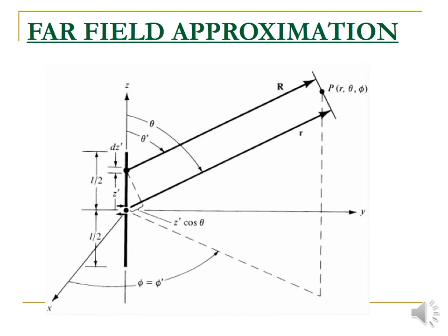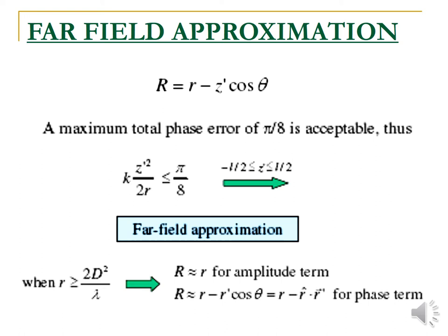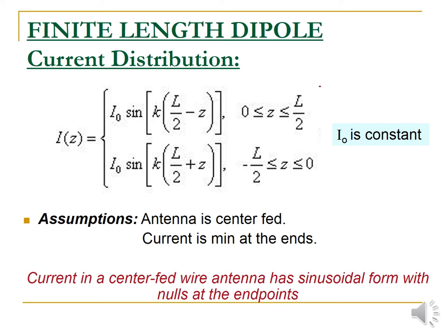Next is far field approximation. We consider a total phase error of pi/8, which is acceptable, and it is represented mathematically as k × z_0^2 / (2R) ≤ pi/8. The far field approximation condition is given as R ≥ 2d^2 / lambda. For the finite length dipole, the current distribution is: I(z) = I_0 × sin[k(L/2 − z)] for 0 to L/2, and I_0 × sin[k(L/2 + z)] for −L/2 to 0.